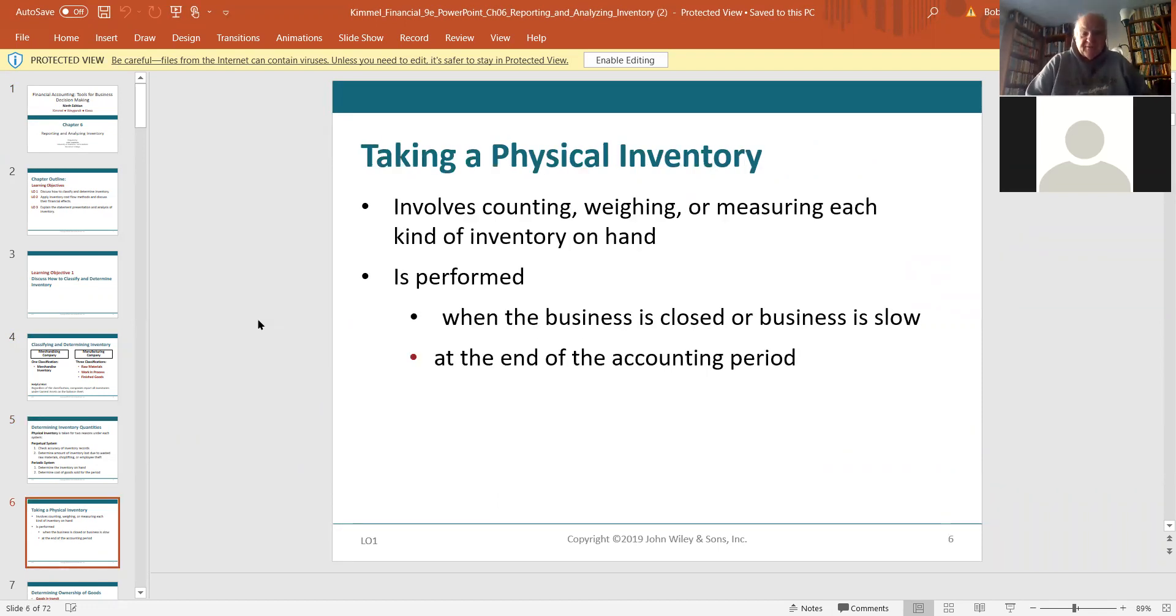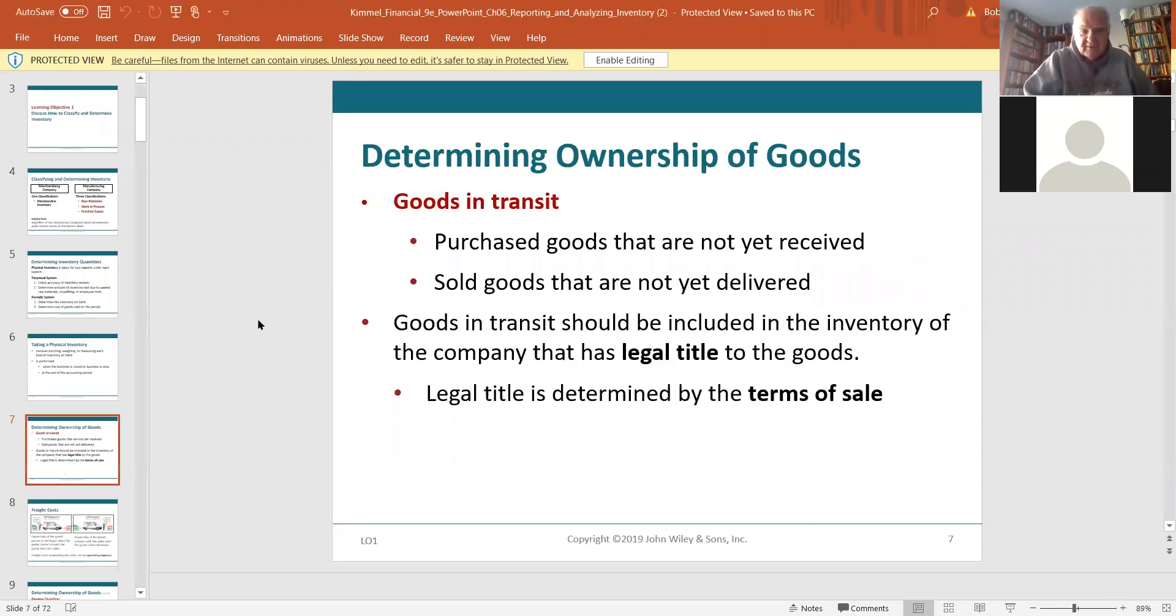And what's a physical inventory? It's the actual counting, the weighing, the measuring, each kind of inventory on hand. And it's normally performed when the business is closed or the business is slow. You have to be closed because when you're counting the inventory, you can't have people moving stuff in and out of the stock for customers while you're trying to count. It causes a lot of confusion. It's always done at the end of an accounting period.